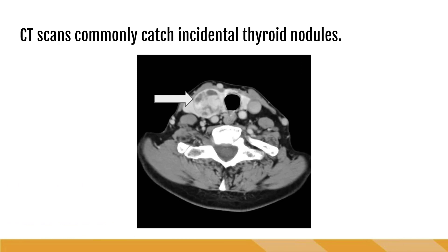CT stands for computed tomography — a scan that combines a series of x-ray images taken from different angles around the body to create cross-sectional images or slices of the bones, blood vessels, and soft tissues, providing more detail than a plain x-ray. CT scans commonly catch incidental thyroid nodules that are followed up by ultrasound exams for better characterization. Looking at our image, we find the trachea — the black circle in the middle of the neck filled with air — and we can see the cervical spine, confirming we're in the neck, with the thyroid tissue visible around it.